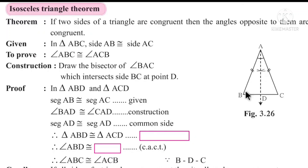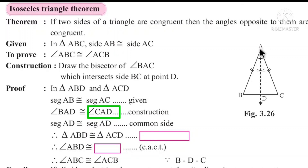In the proof: Step 1 — AB ≅ AC (given). Step 2 — angle BAD ≅ angle CAD (construction, AD is the bisector). Step 3 — AD is the common side of both triangles. Therefore, triangle ABD ≅ triangle ACD by the SAS test — Side, Angle, Side.